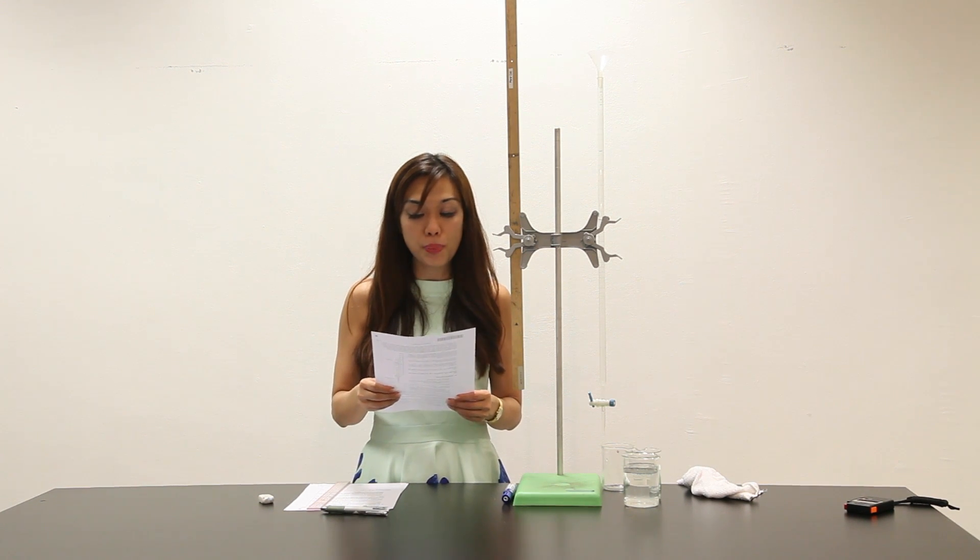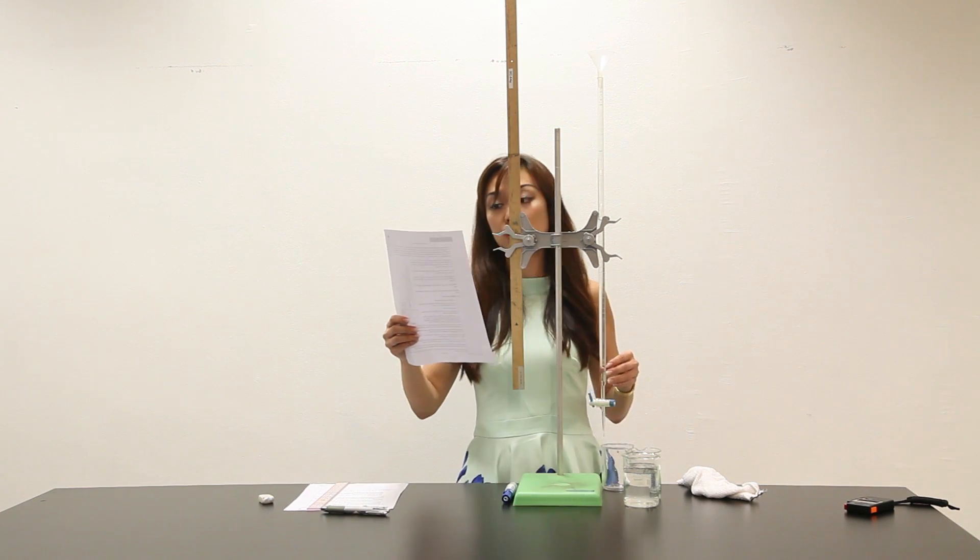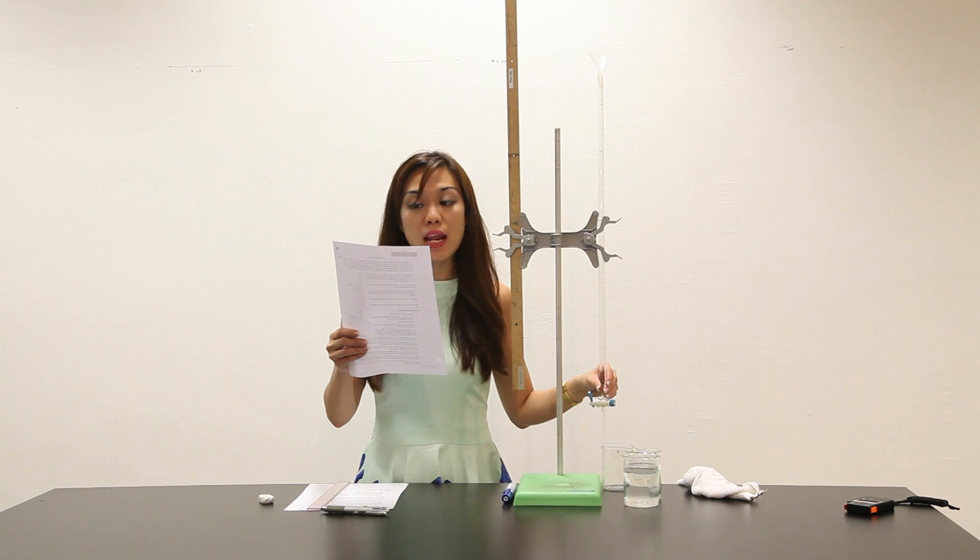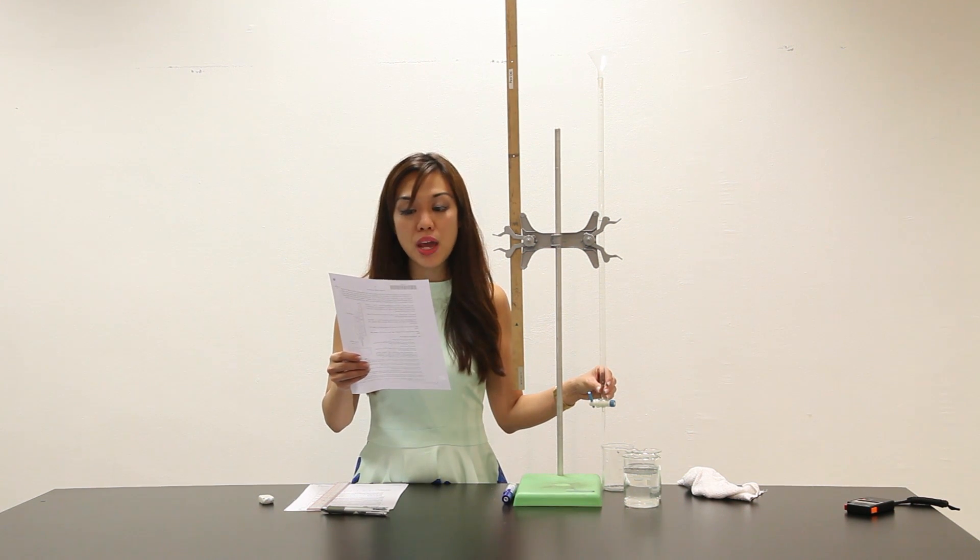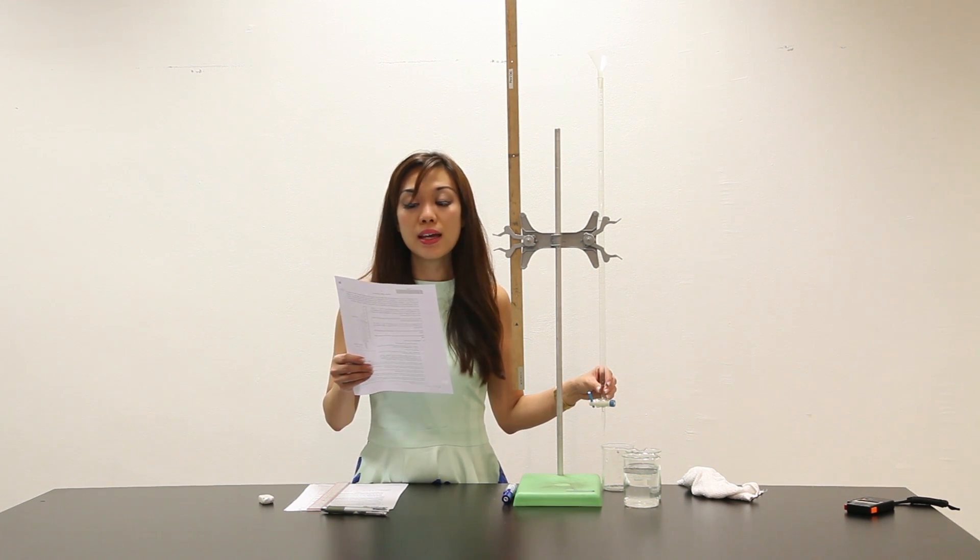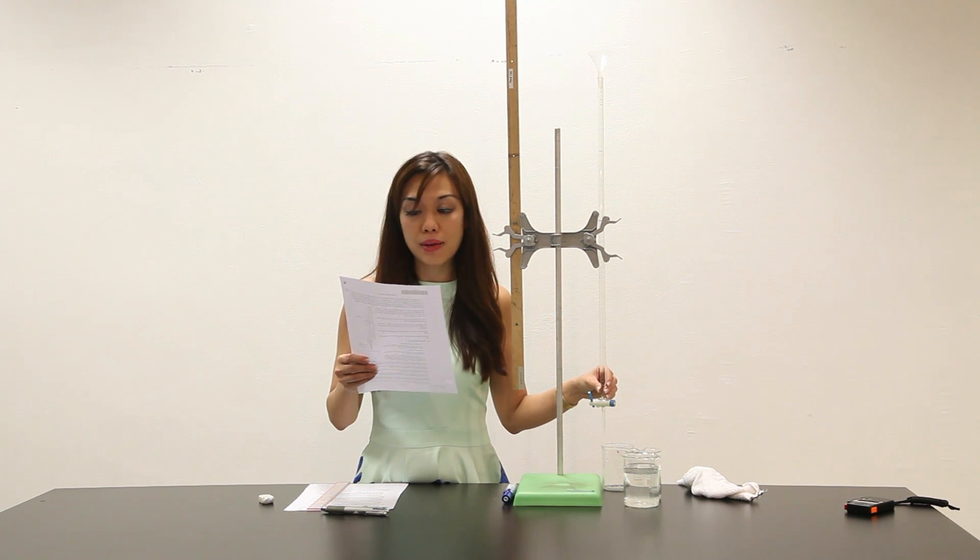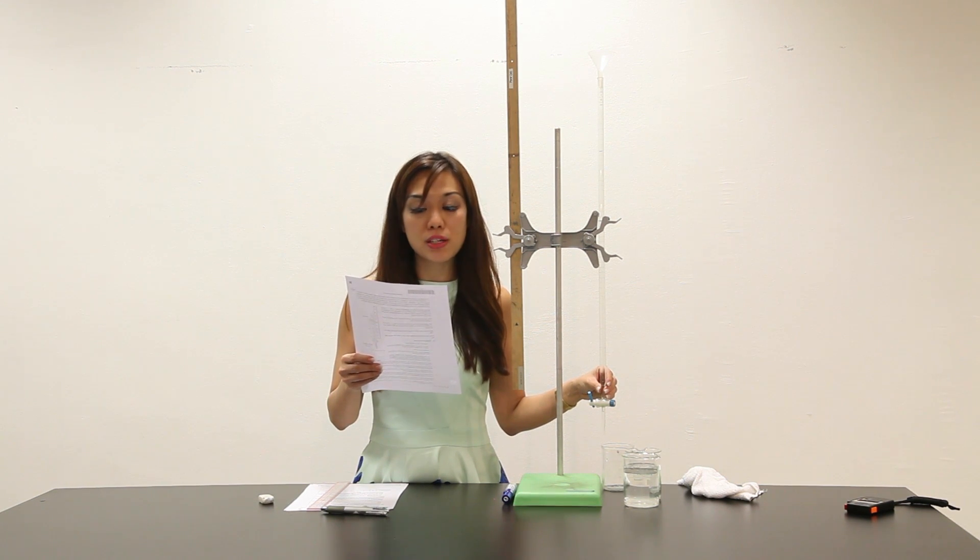You are going to use the apparatus as shown in Figure 1.1, which is here, which has already been set up for you to measure the variation in the height of water in the burette H with time, when the tap is open by a small amount.